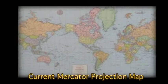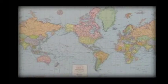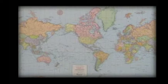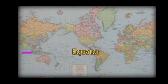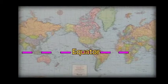The Mercator projection compresses the region around the tropics. Most Mercator maps today crop the bottom of the map, removing Antarctica, resulting in the northern half of the Earth taking up two-thirds of the map area. The South then becomes diminished in size and importance when compared to the North.